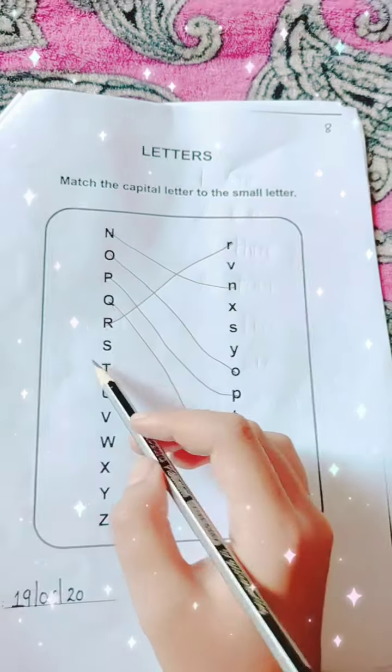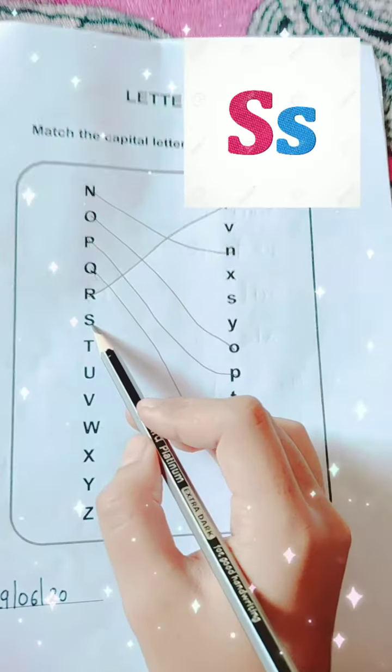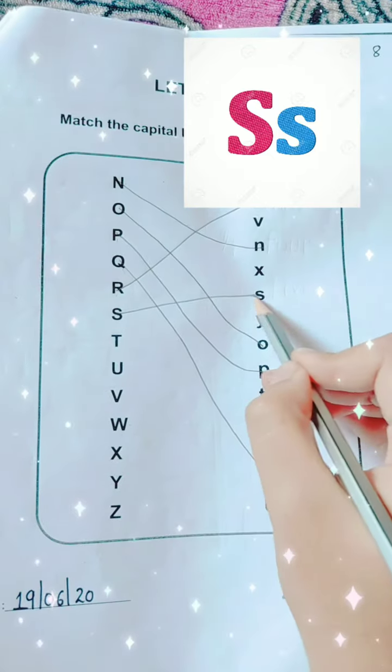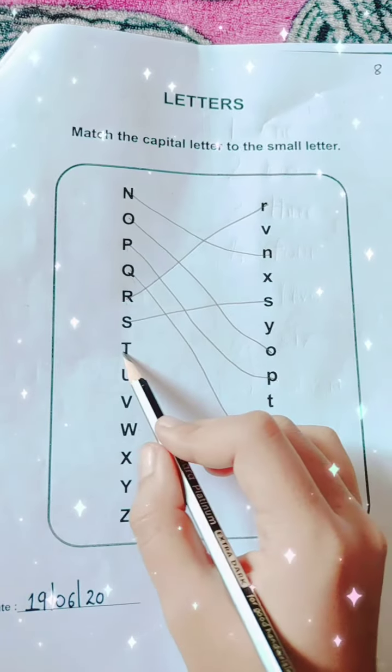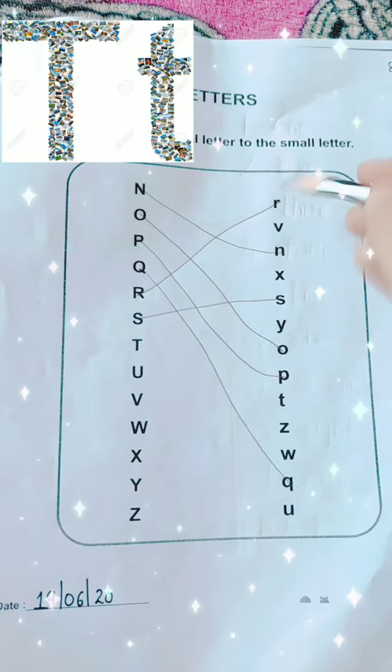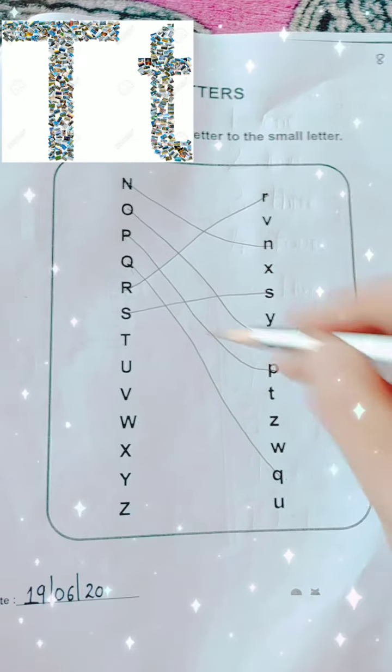Next is capital S. Where is small S? Here. Capital T. Small t. Here.